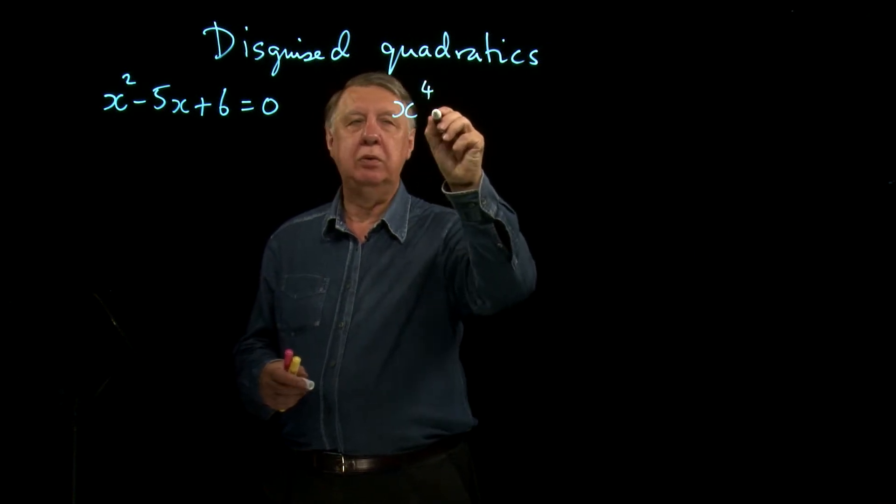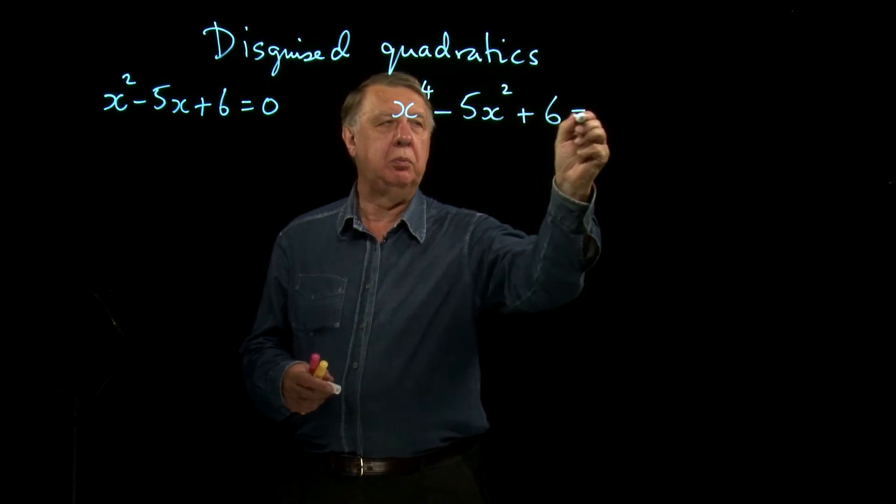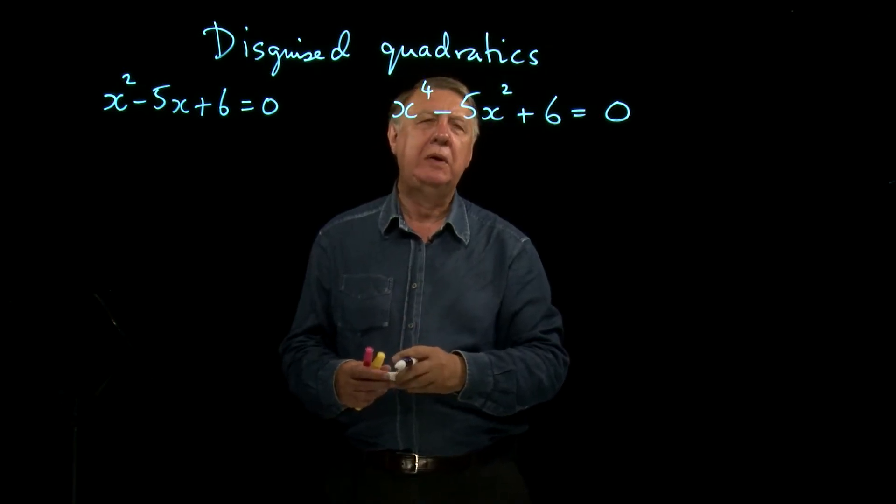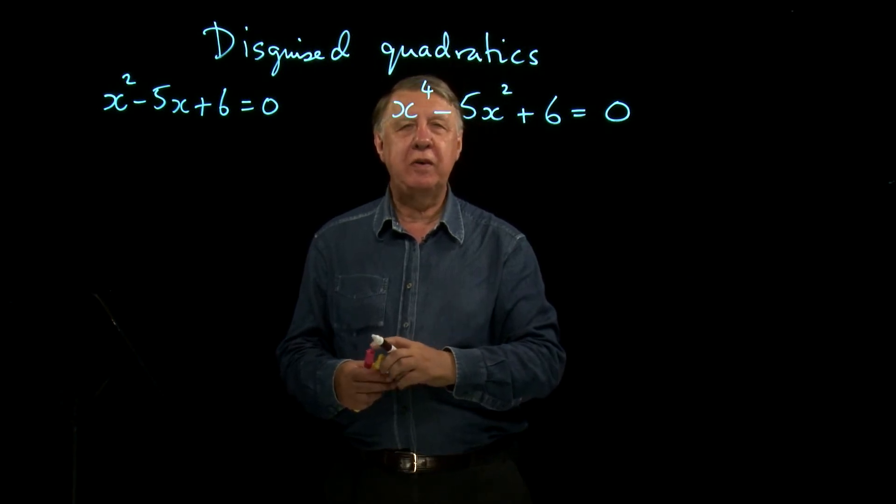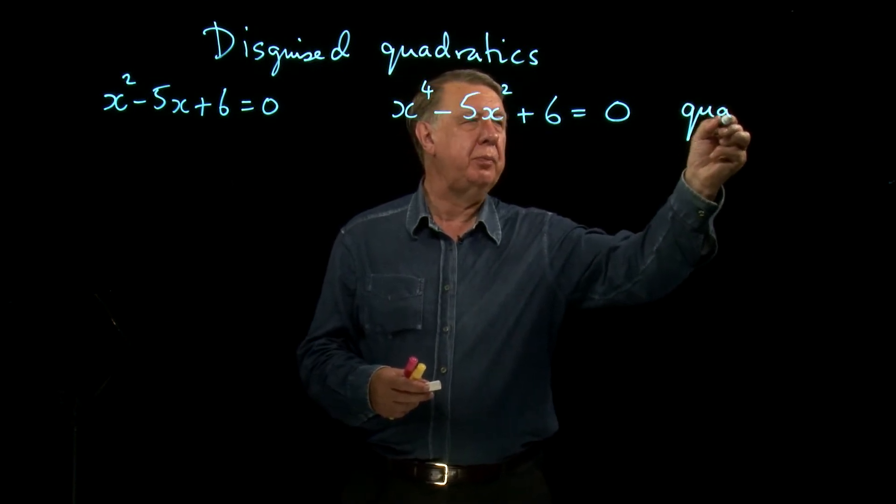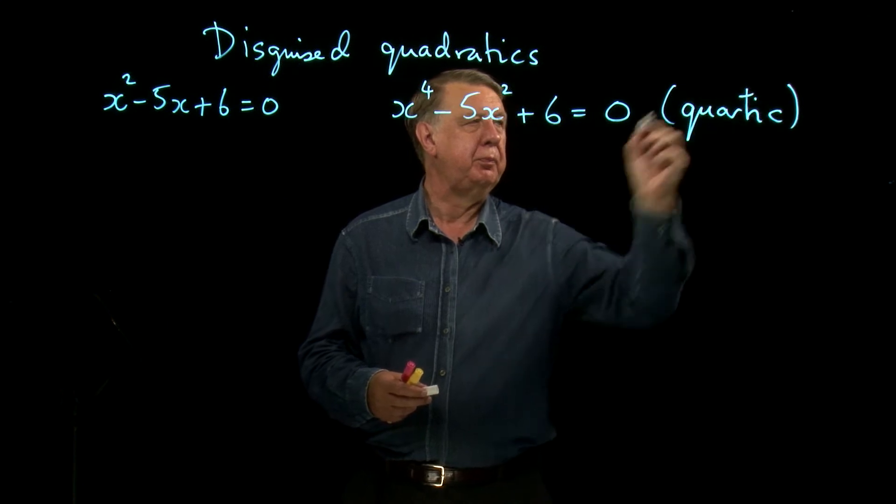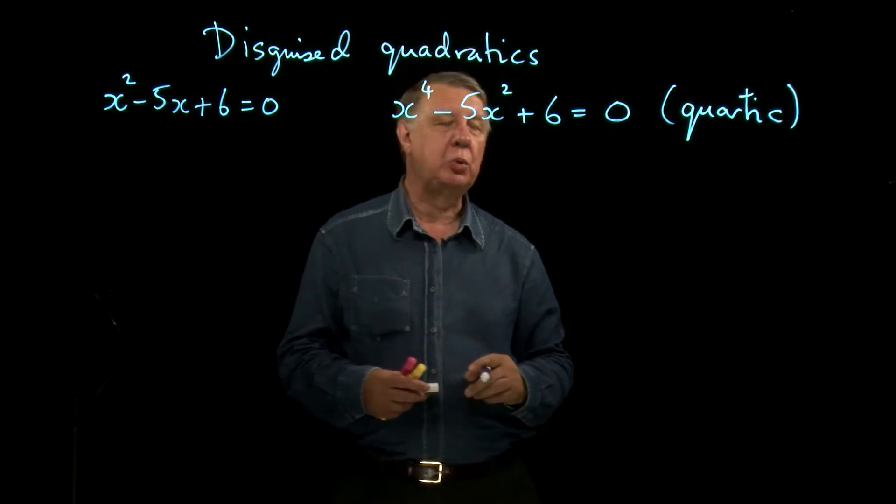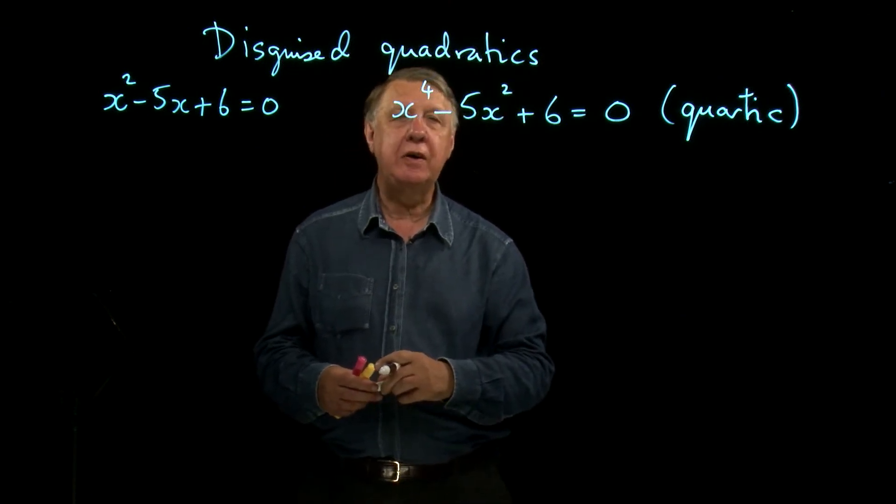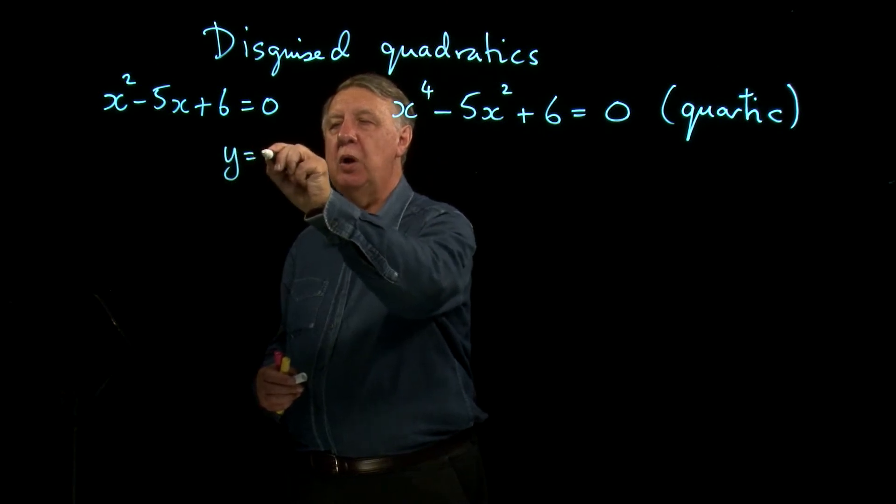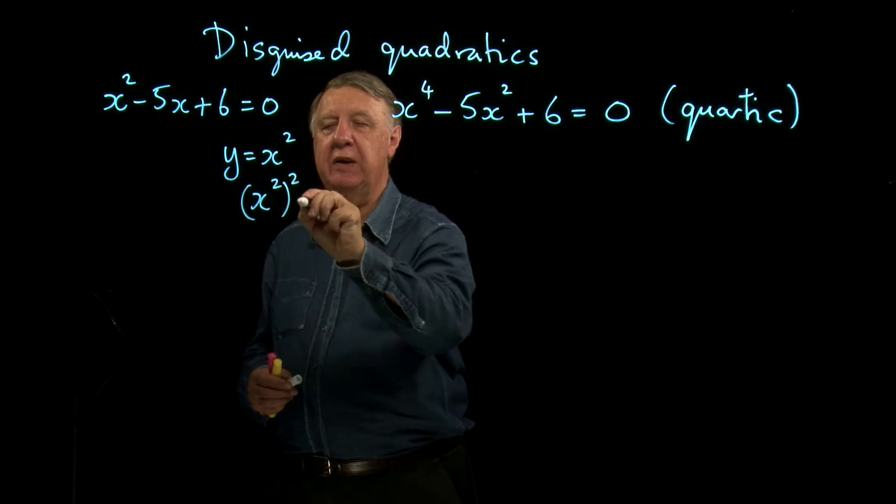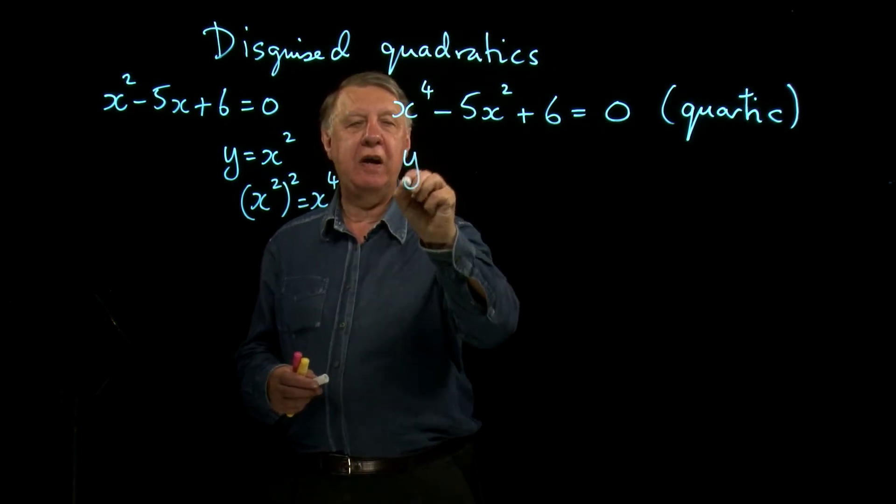But supposing this equation turned up, what would your first reaction be if you saw that? Well, you'd see this power of x as 4, and you might be saying, oh, I haven't done this topic. This doesn't look like anything we've covered in Core 1 so far. In fact, its proper name would be a quartic equation. x to the 4 means quartic. But the clue is in the title to the lesson. It's actually a disguised quadratic, because if I choose to write y equal to x squared, then x to the 4 is, of course, x squared squared, which means that that becomes y squared.